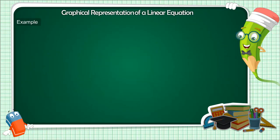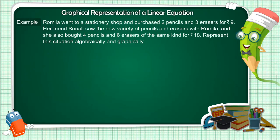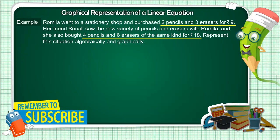Let us try to understand it through an example. Romila buys two pencils and three erasers for 9 rupees from a stationary shop. Her friend Sonali also buys four pencils and six erasers for 18 rupees from there. We have to show these two situations on the graph.